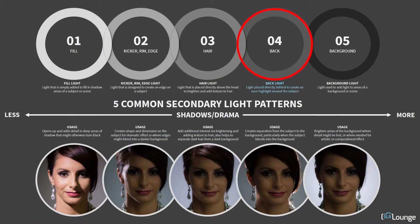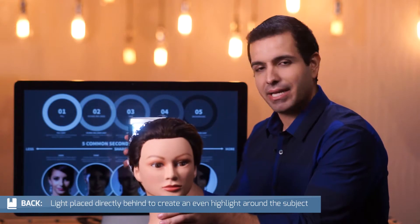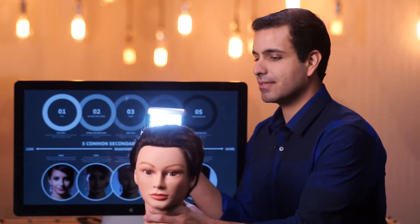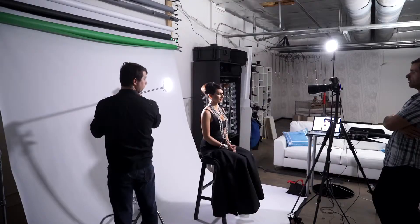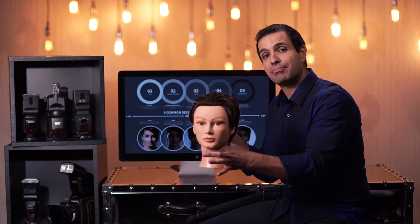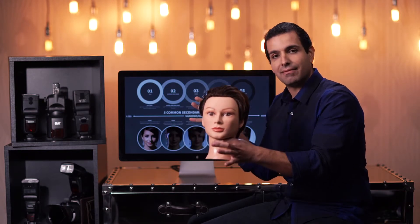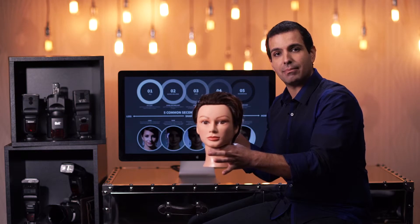Next we have the backlight. The backlight comes directly behind the subject. This is where it gets confusing with a hair light because it also lights up the hair somewhat. A backlight is placed directly behind the subject's head and it brightens up and creates an edge around the entire body — sometimes people call this a rim light too. It basically adds a light rim around the edge of a subject, which is fantastic for separating a subject from a dark background. If they're wearing a dark suit against a dark background, a subtle backlight helps separate them from the background.